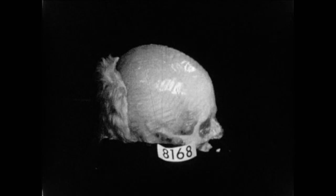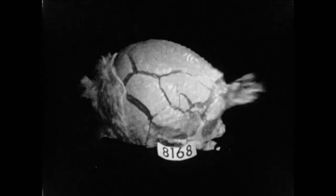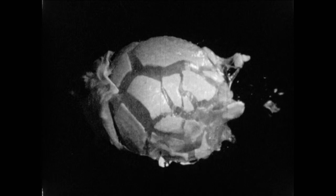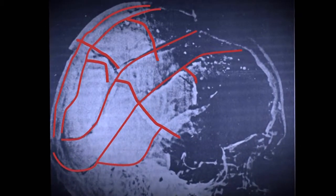First, the impact of a bullet entering from the rear causes fractures to radiate forward. But almost at the same instant, a pressure wave inside the gelatin causes a second wave of fractures in a perpendicular direction, just like what Cummings sees on the Kennedy X-ray.